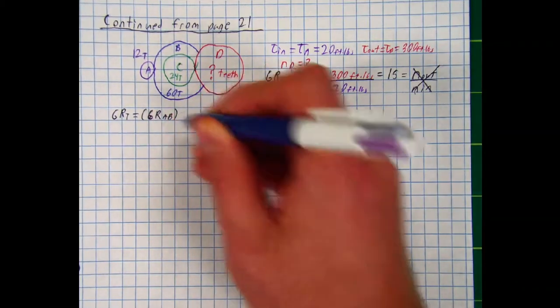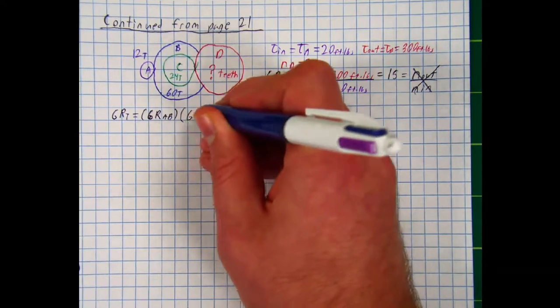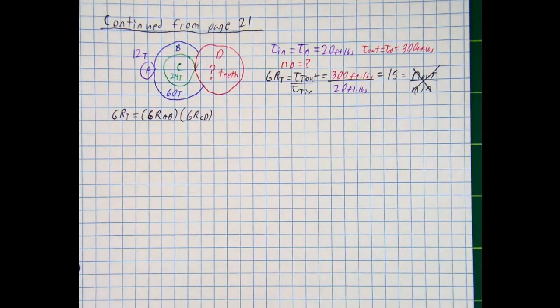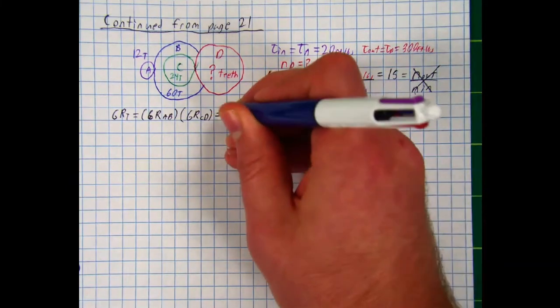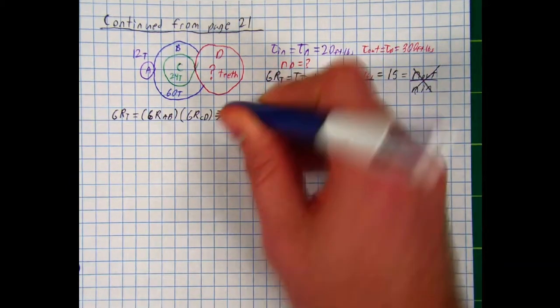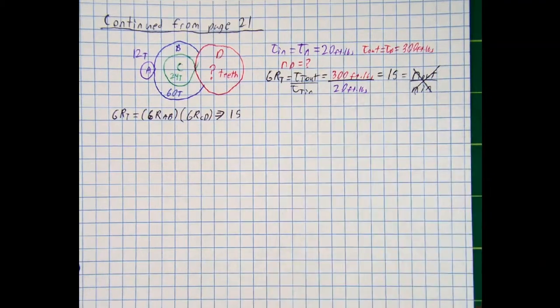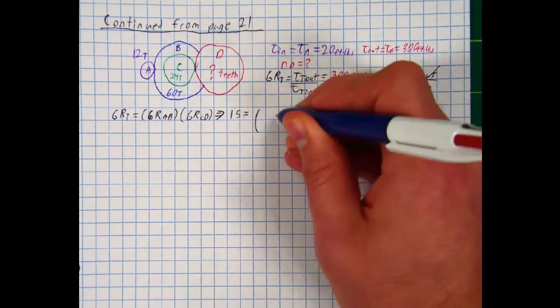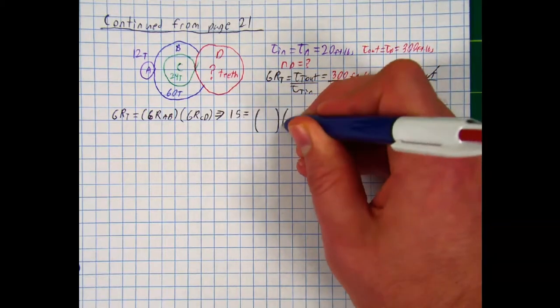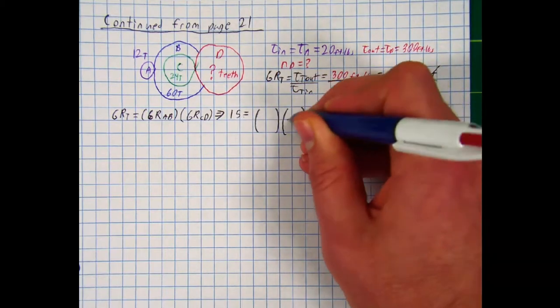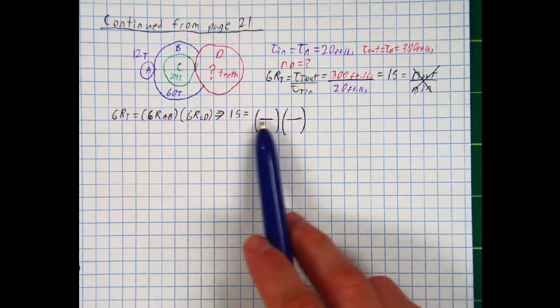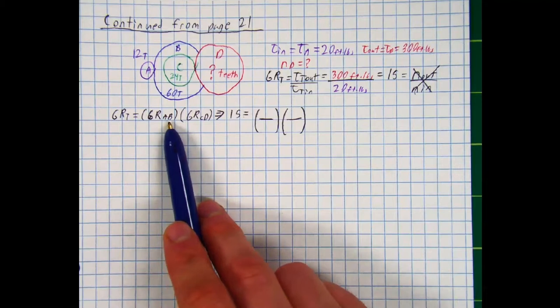We can say the gear ratio total is equal to our two simple gear ratio formulas. So gear ratio AB multiplied by gear ratio CD. And to show you what I mean, let's start plugging in numbers. And so we can say, okay, our gear ratio total is 15. We just figured that out. And I'm going to set that equal to my two ratios. And so I'm going to make parentheses for two ratios and draw my fractions. Just to make it easier to color code for myself.